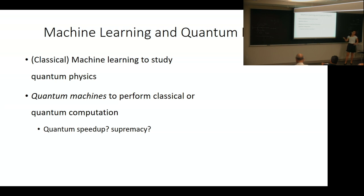There are different ways to connect these two fields. First, many people have used classical machine learning techniques to study quantum physics, like using neural networks to model ground states of many-body Hamiltonians.